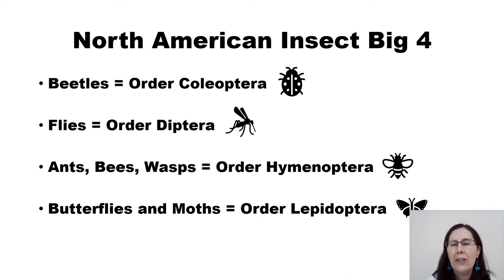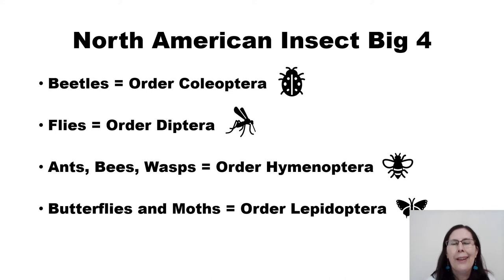Insects are divided into 24 orders. Of those orders, these four have the most recorded species. The top species are all beetles. They come from the order Coleoptera. Usually they have a shiny hard shell, such as what a ladybug has.